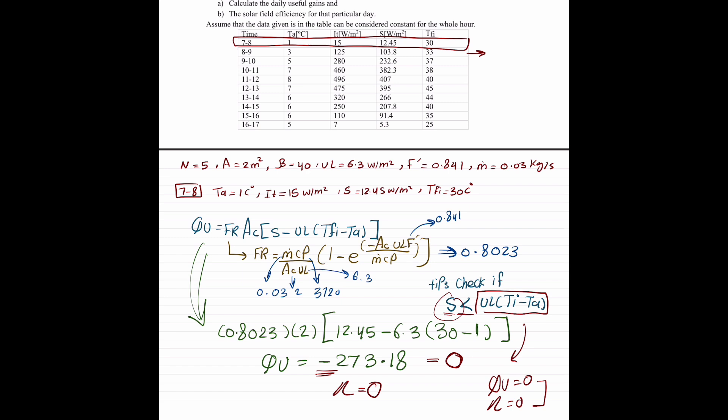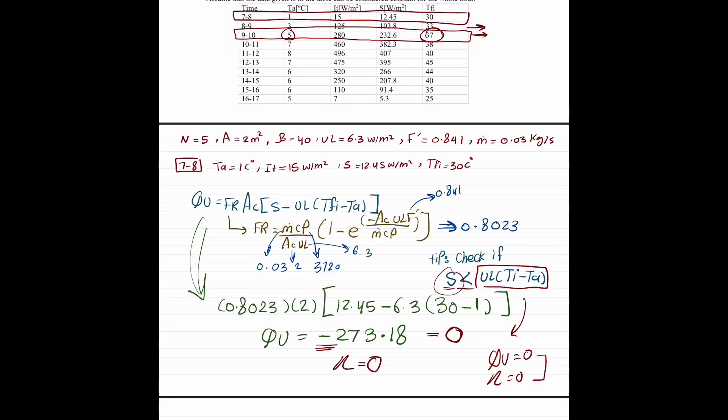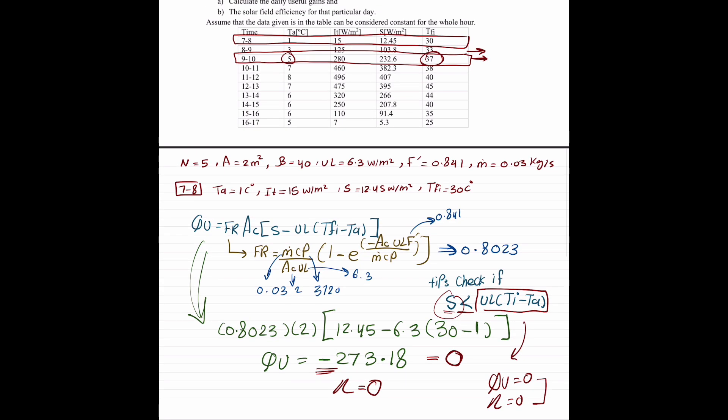So, let's solve 9 to 10. This row will not give us 0s. And see what we're going to get.